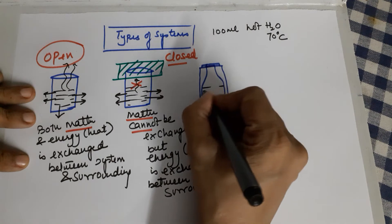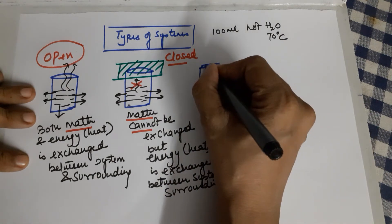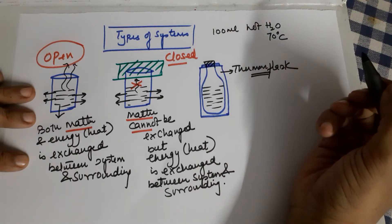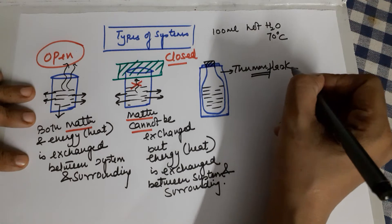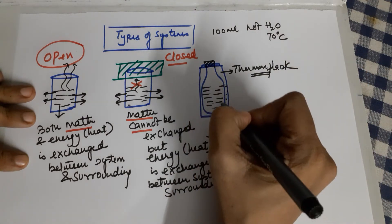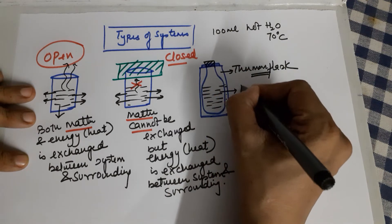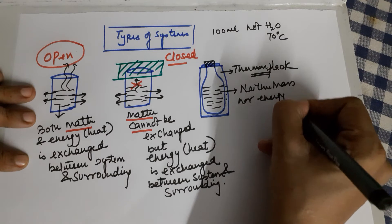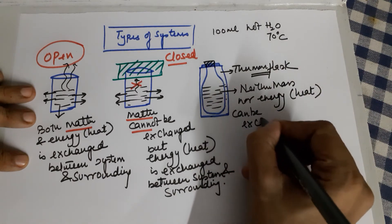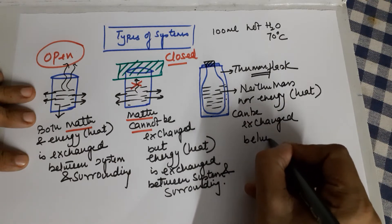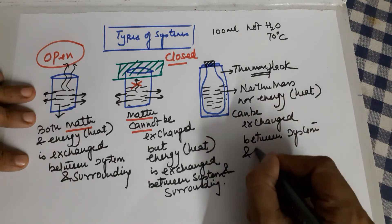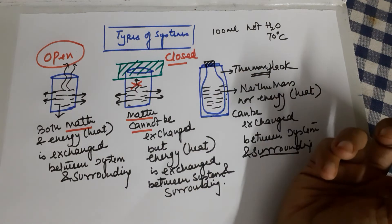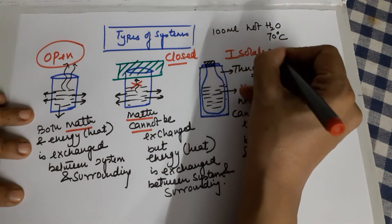Moving to the third type: I have 100 ml of water at 70 degrees C in a tightly packed thermos flask. The thermos flask is totally insulated — glass wool inside the chamber — and it is tightly closed. This means neither water nor heat can be exchanged between the system and surroundings. This kind of system where you cannot exchange matter or energy is called an isolated system.